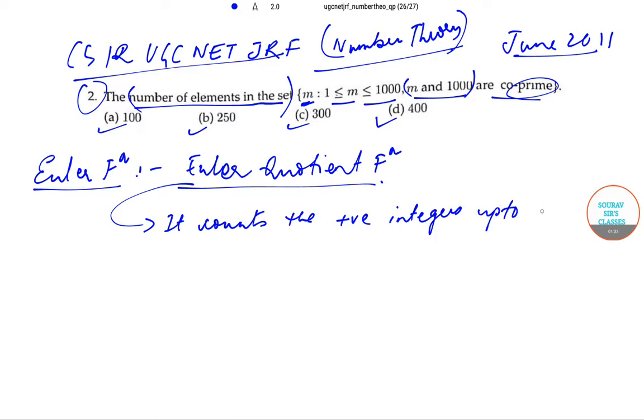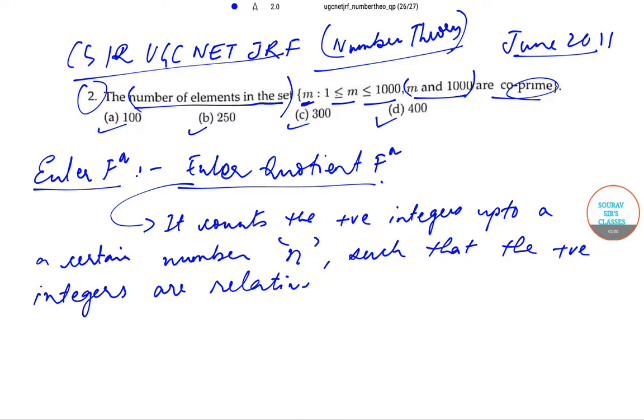In this function, it counts the positive integers up to a certain number, that number can be n, such that the positive integers that we find are relatively prime to a number n.